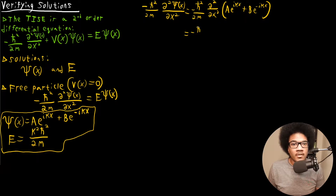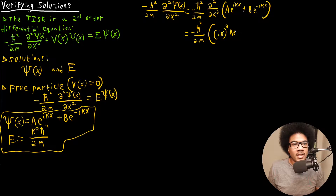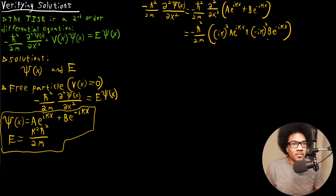Because of the properties of the exponential, it remains essentially unchanged — these constants just come down each time you take the derivative.